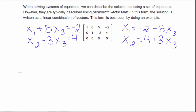To put this in parametric vector form, we want to find the vector x, which consists of x1, x2, and x3.